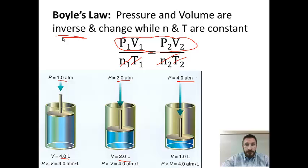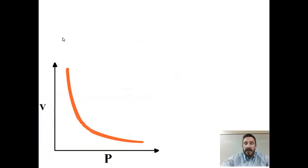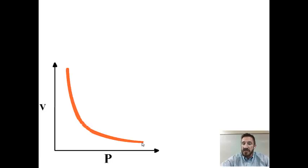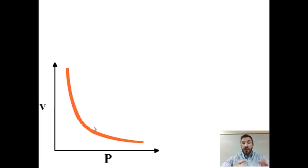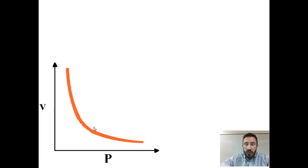Here's a graph of Boyle's Law. As pressure increases, volume gets smaller and smaller. Notice it never decreases to zero, because those gas particles get closer and closer together but never fully collapse. If you decrease the pressure, particles are able to move further apart, they don't hit the sides of the container as often, so pressure is smaller and volume is bigger.